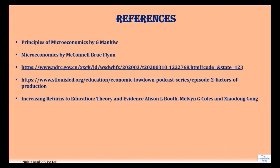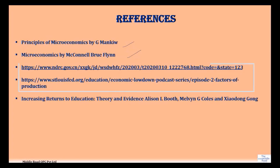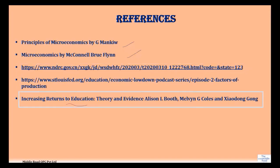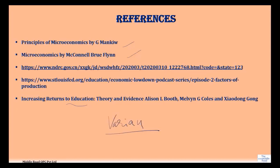These are some of the references — two academic books and two reports you can refer to, both interesting reads with links provided. The third report is on increasing returns to education. The OECD also has a very interesting report you can refer to. Another book coming in is Intermediate Microeconomics by Varian, which you could also look at.